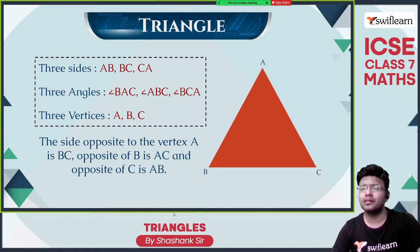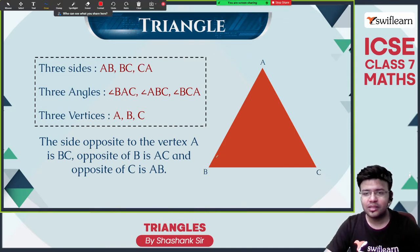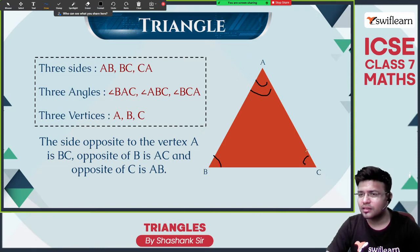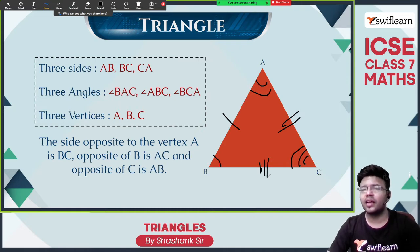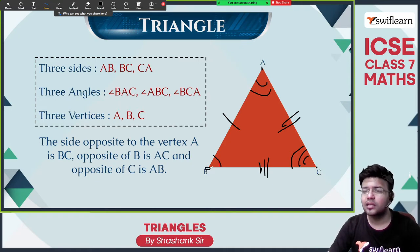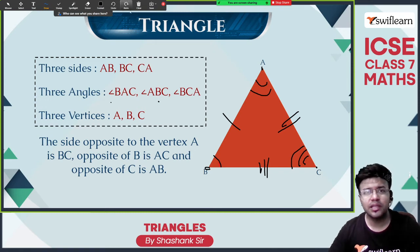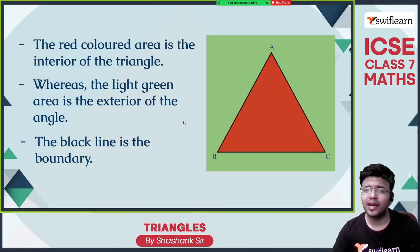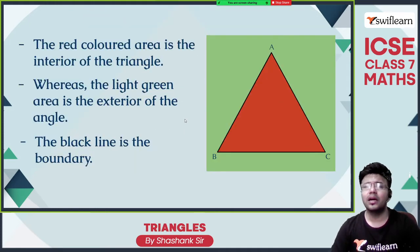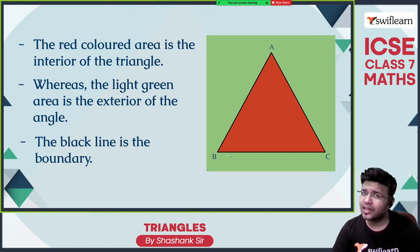It has 3 interior angles: angle BAC, angle ABC, and angle AC. This is one angle, this is the second angle, this is the third angle. This is the first side, second side, and the third side. And 3 vertices — this is one vertex, this is another vertex, and this is the third vertex. The side opposite to vertex A is BC. The red colored area is the interior of the triangle, whereas the green color is known as the exterior of the triangle, and the black line is called the boundary.